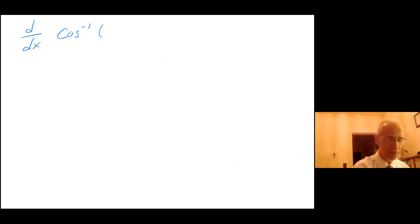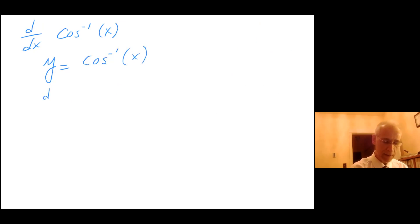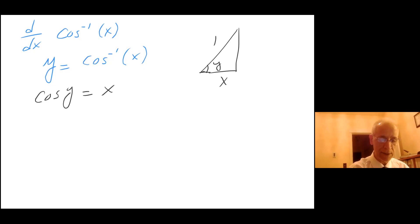For the derivative of cosine inverse of x, following the same logic, we let y equal cosine inverse of x. This means that cosine of y equals x. If this is my angle y, by definition cosine is adjacent over hypotenuse.